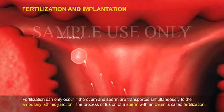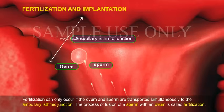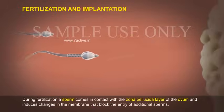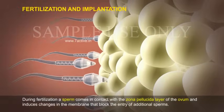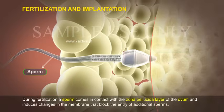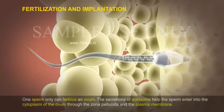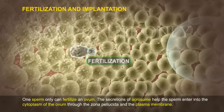Fertilization can only occur if the ovum and sperm are transported simultaneously to the ampullary isthmic junction. The process of fusion of a sperm with an ovum is called fertilization. During fertilization, a sperm comes in contact with the zona pellucida layer of the ovum and induces changes in the membrane that block the entry of additional sperms. Only one sperm can fertilize an ovum.